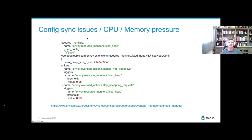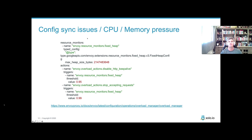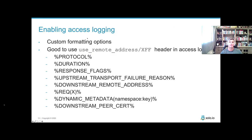Here's an example of what an overload manager configuration might look like: you specify that you're going to monitor the heap space, and if it gets to 95% or crosses that high watermark, then you're going to disable keep-alive. That means long-lived idle connections will stop being kept alive and should eventually get cleaned up. If it hits 99% or crosses that high watermark, you will stop accepting new requests. It's a really powerful feature when running Envoy — check the docs for more details.